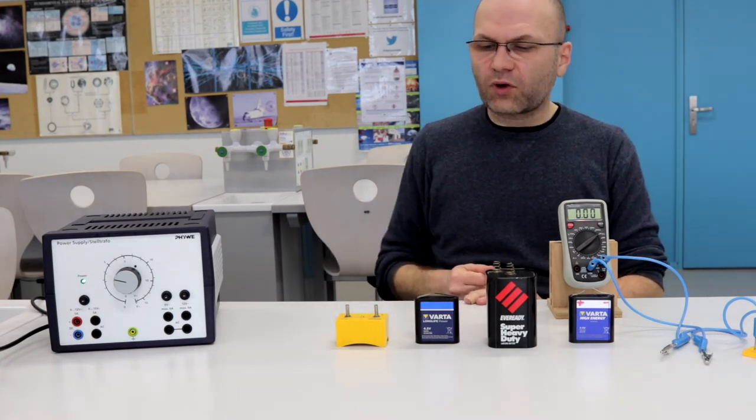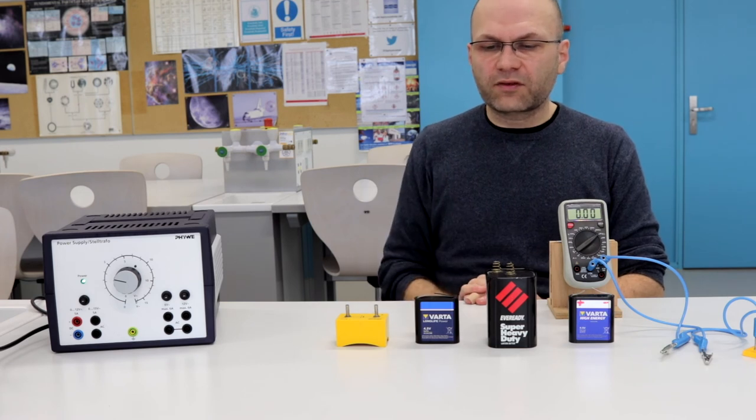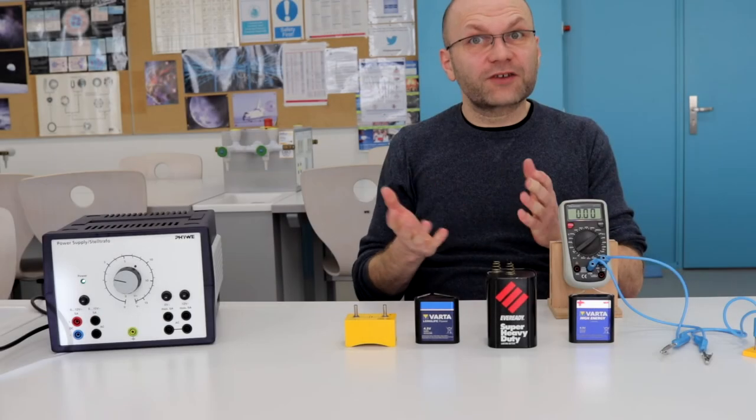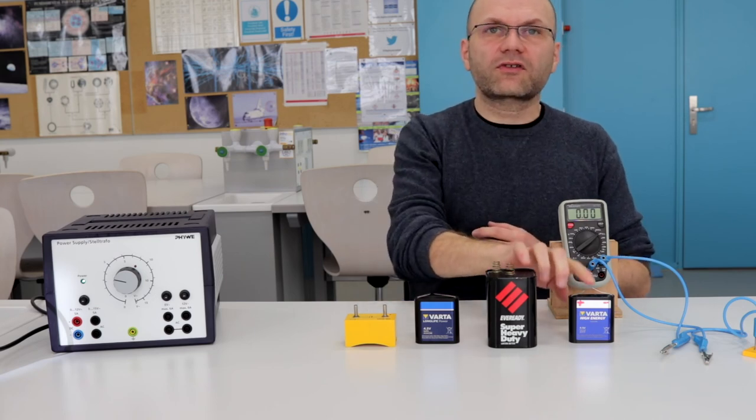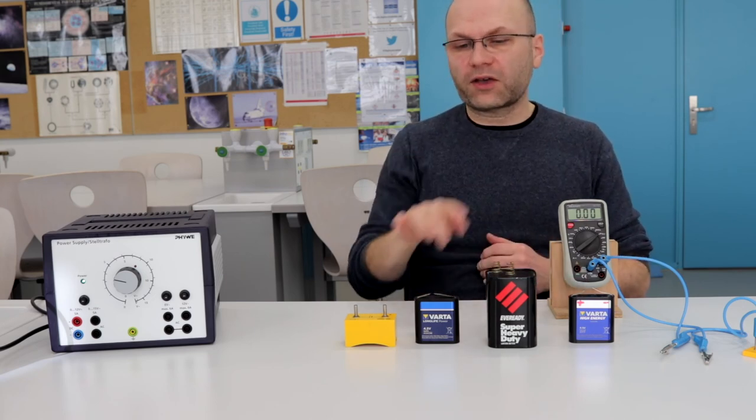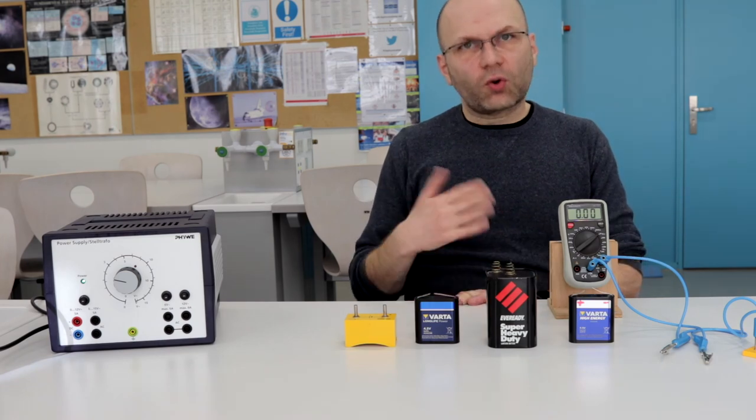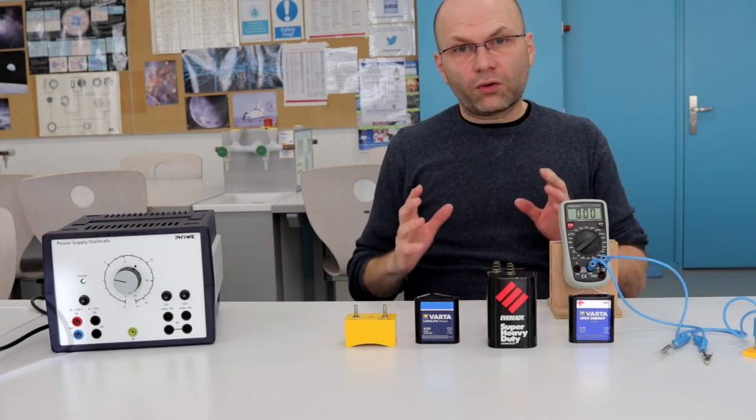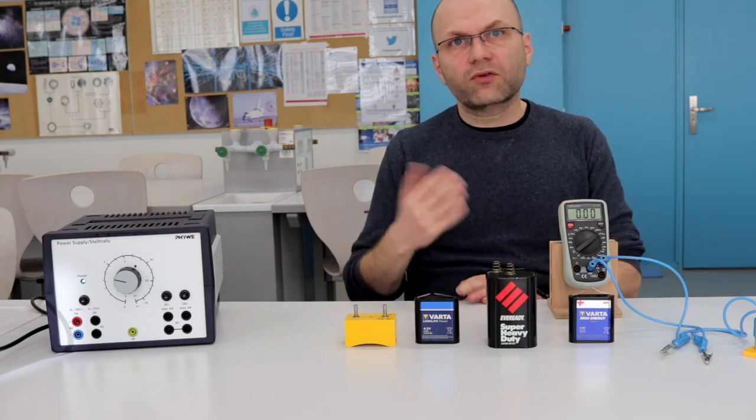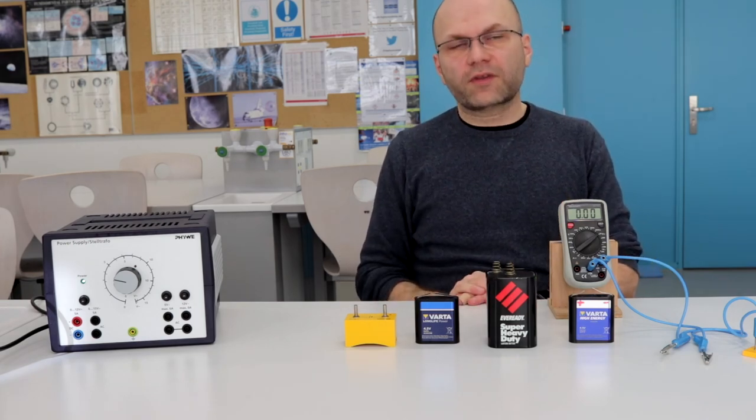This has an EMF of 1.5 volts. This has an EMF of 4.5 volts. So the explanation to this apparent puzzle is that the internal resistance of these two batteries is very high in comparison with these two. The older the battery gets, the higher the internal resistance. So in a real battery, you have to consider the internal resistance of the battery.